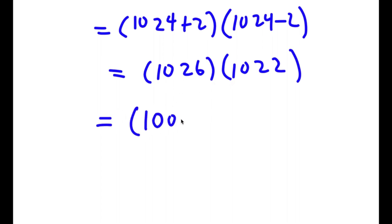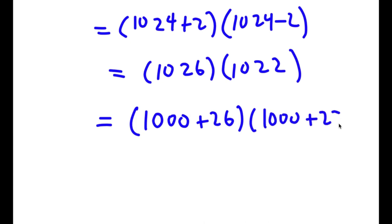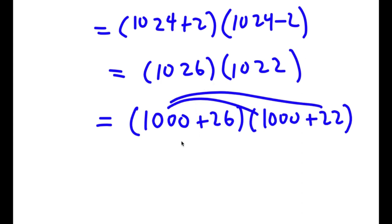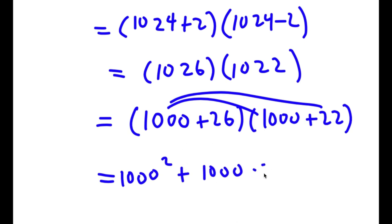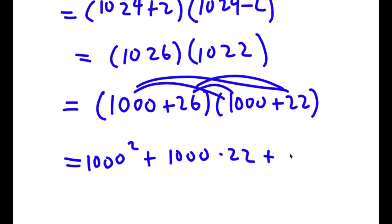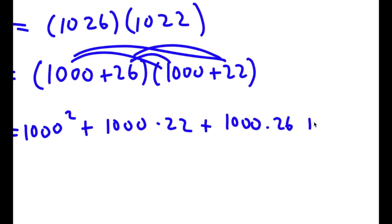So 1026 we can rewrite as 1000 plus 26, and 1022 we can rewrite as 1000 plus 22. All we have to do to get our answer is distribute. We're going to first distribute 1000 to 1022. So now I have 1000 squared — because 1000 times 1000 is 1000 squared — plus 1000 times 22. Then I'm going to distribute the 26: so I have 26 times 1000, and finally plus 26 times 22.